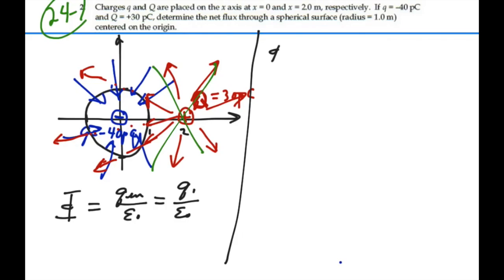So our net flux is going to be Q1, which is minus 40 picocoulombs, divided by epsilon-naught, which is 8.85 times 10 to minus 12. The 10 to minus 12s cancel out, and we'll have minus 40 divided by 8.85.